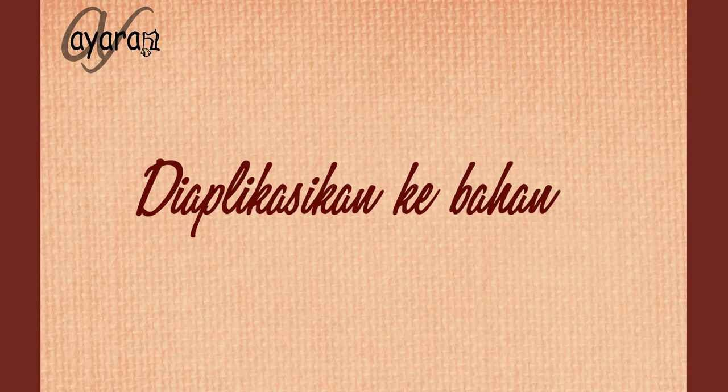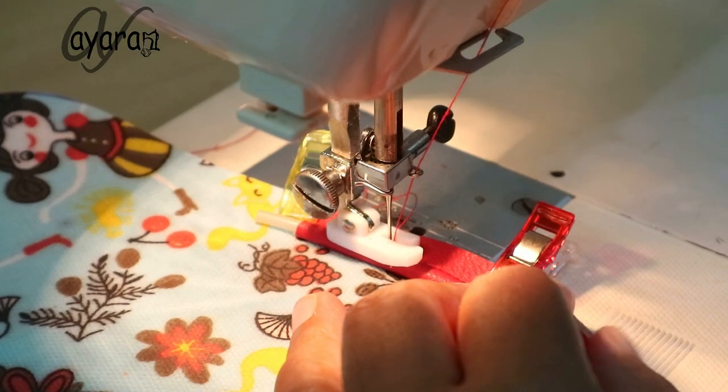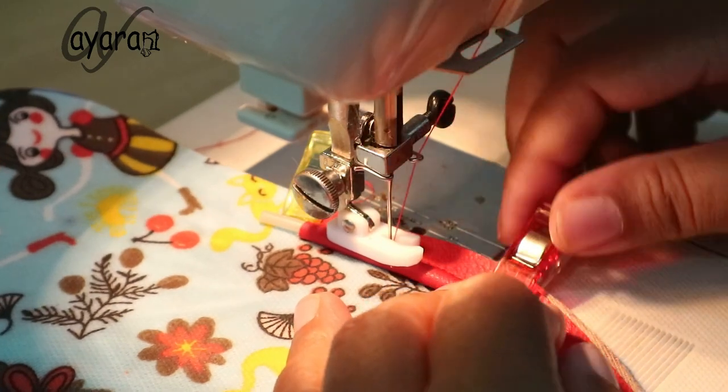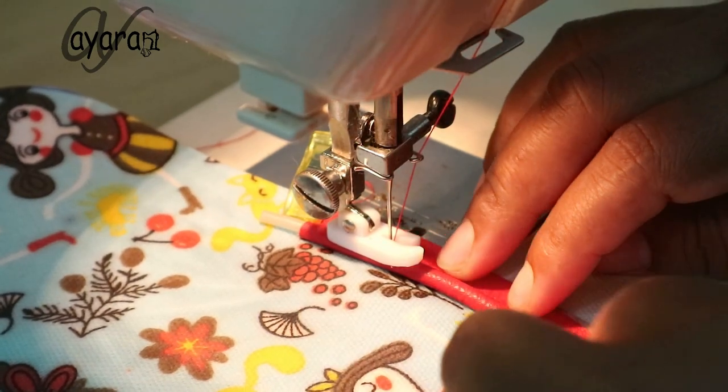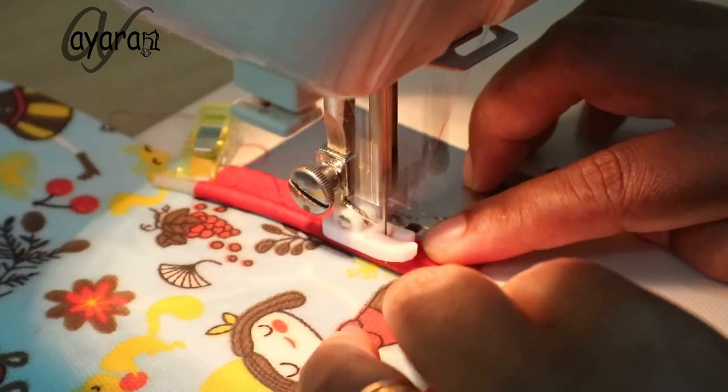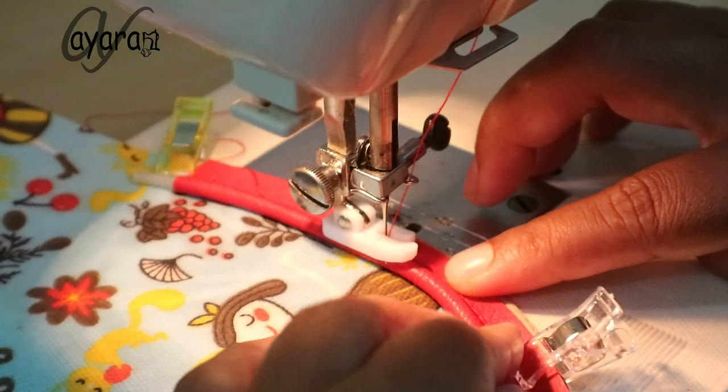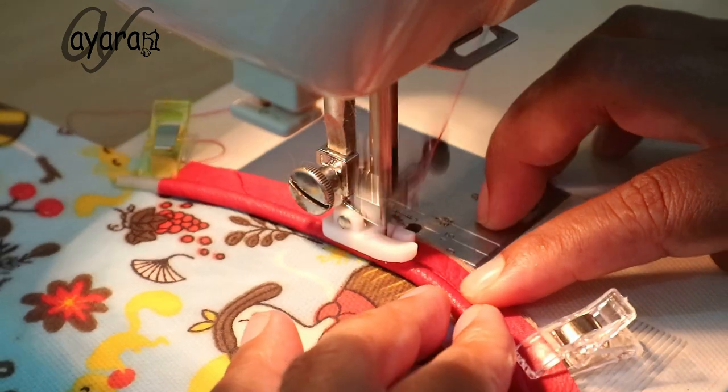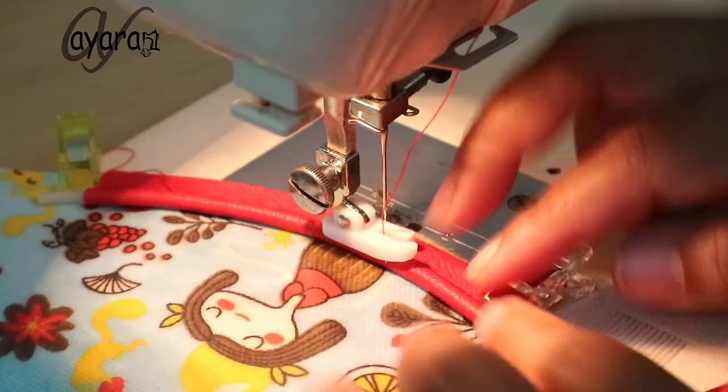Now we'll apply it to the fabric. The method is: this part will be covered at the end. Notice I'm leaving extra, then I start sewing. This has been measured - it must be exactly one centimeter seam allowance.